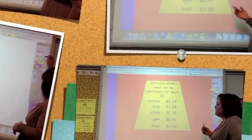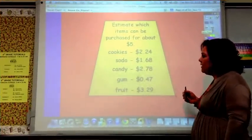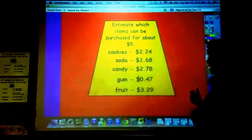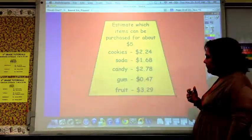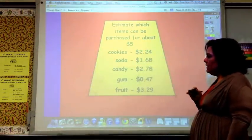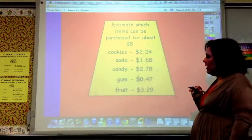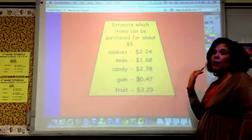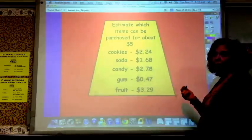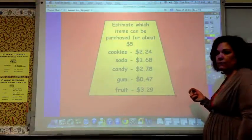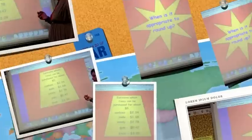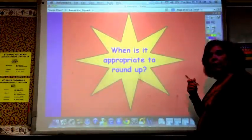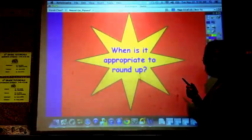Okay, I want you to estimate which items can be purchased for about five dollars. You can do any combination. Maybe you'd want to do soda and candy or cookies and soda. You wouldn't be able to do cookies and candy. You'd go over. So, think about what you could buy without going over what combinations. And tomorrow, whenever you discuss this in class, discuss when it might be appropriate to round up. When do you want to make sure?